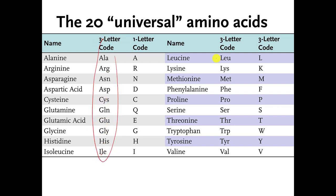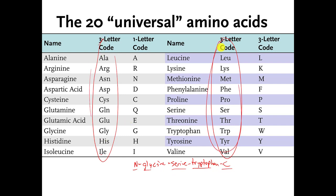I don't expect you to memorize these, but I will give them to you on the last exam — you'll have them at your disposal, either in a table or in your book. I expect you to understand what those abbreviations mean. So instead of writing N-terminus, glycine connected to serine connected to tryptophan, C-terminus, we could use three-letter abbreviations: N-GLY (because glycine's three-letter code is GLY), then SER for serine, and TRP for tryptophan. That's a little bit easier, and it means the same thing but took fewer letters to write.